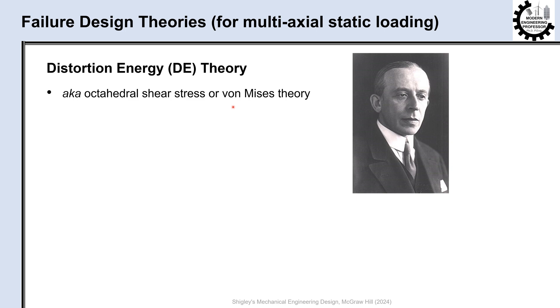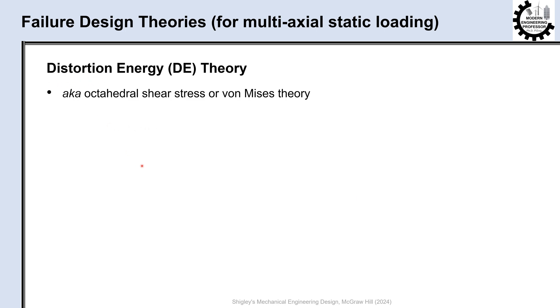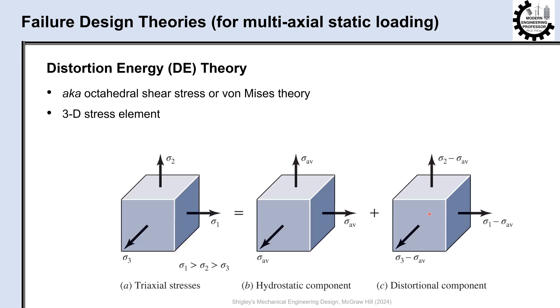This theory was based on observations that yielding was not a simple tensile or compressive phenomenon, but rather was related to the angular distortion of the stressed element. This can be schematically explained in this figure. Consider a three-dimensional stress state designated by the three principal normal stresses.